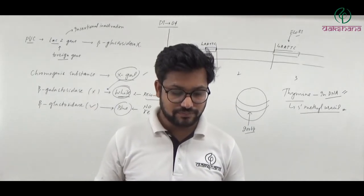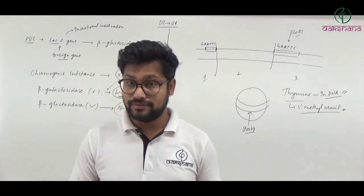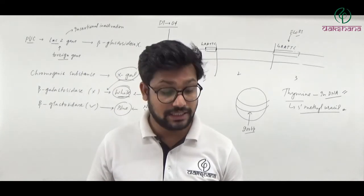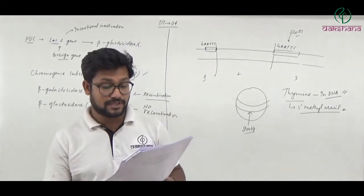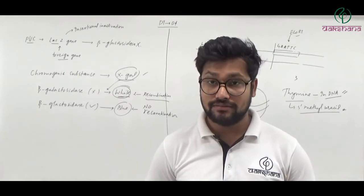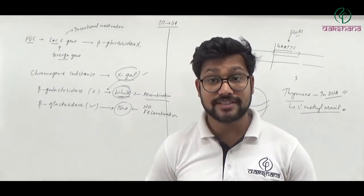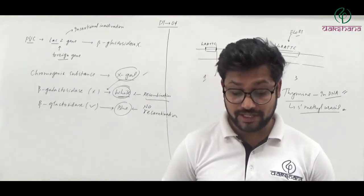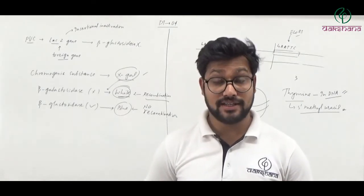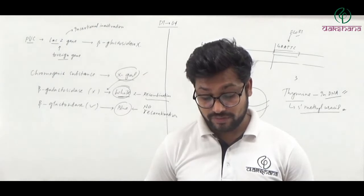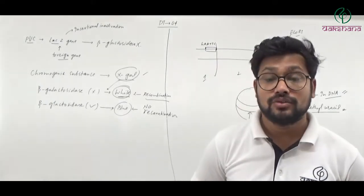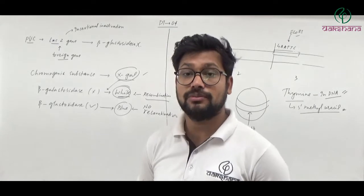Question number thirty: Satellite DNA is what? Option one — polymorphic DNA — satellite DNA indicates polymorphic DNA, correct. Option two — intronic sequence of DNA — because it is not expressed in any peptide, it is a non-coding sequence, so intronic sequence is correct. Option three — forms the basis of DNA fingerprinting — satellite DNA is used in DNA fingerprinting, very important. So all three options are correct, and question number thirty's fourth option — more than one option is correct — is the right answer.